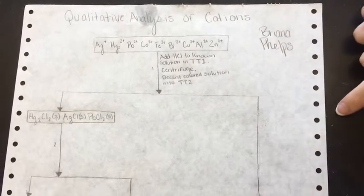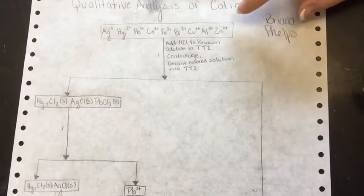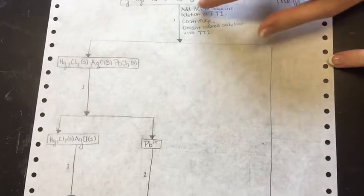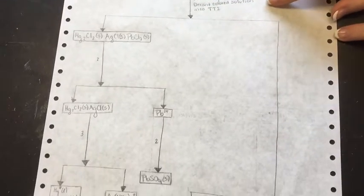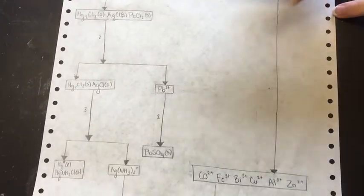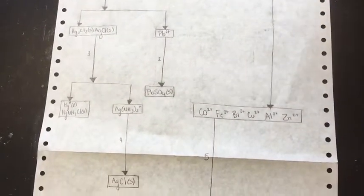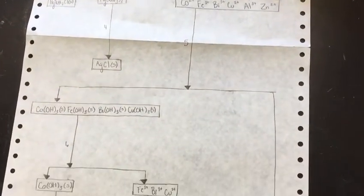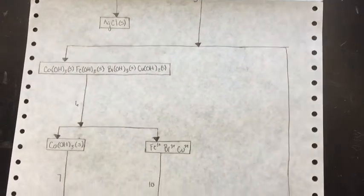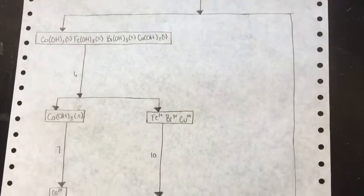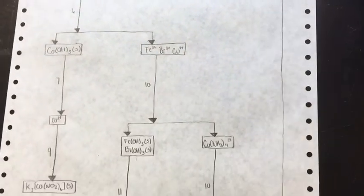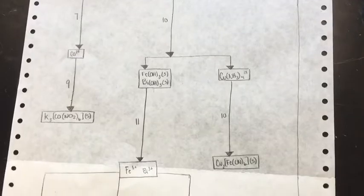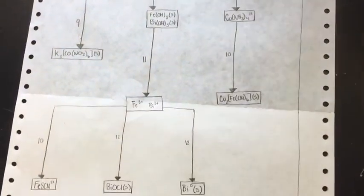So this is your flowchart. In each step you start with some ions, and you outline briefly what your procedure is on each step, and you omit step eight. You have precipitates, and in each step you're adding a solute to separate the precipitates. When you get to a heavily outlined box, that means that you have reached your confirmatory substance.